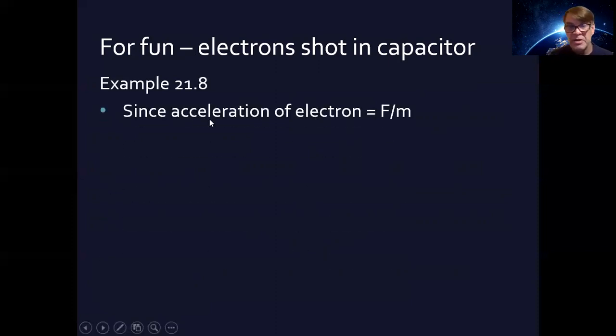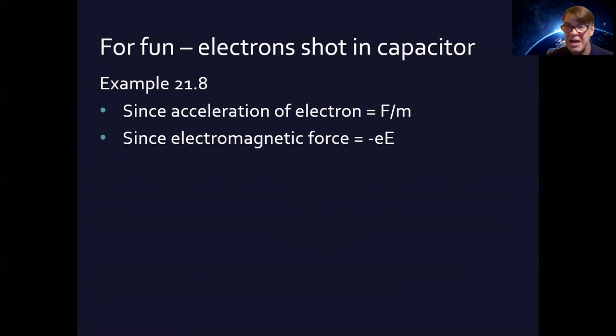Now the acceleration of electron is going to be F over M. Why? Because F equals MA, right? So A equals F divided by M. This is old stuff. Now the electromagnetic force is going to be negative E times the electric field amount. Negative E is the charge on an electron and electrons we say have a negative charge. Why does this work? Because we have said that F equals Q times E, right? We said that. And so this is Q. The charge is negative amount of electron charge times the electric field.